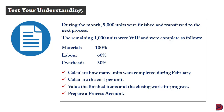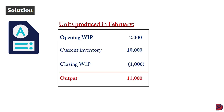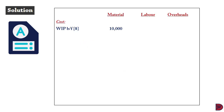We calculate units completed in February: opening WIP 2,000 plus current period 10,000 less closing WIP 1,000 gives 11,000 units. For costs, the opening WIP values are $10,000 for materials, $4,000 for labor, and $2,400 for overheads. Current period costs are $50,000 for materials, $31,800 for labor, and $20,200 for overheads. Combined totals: $60,000 for materials, $35,800 for labor, and $22,600 for overheads.